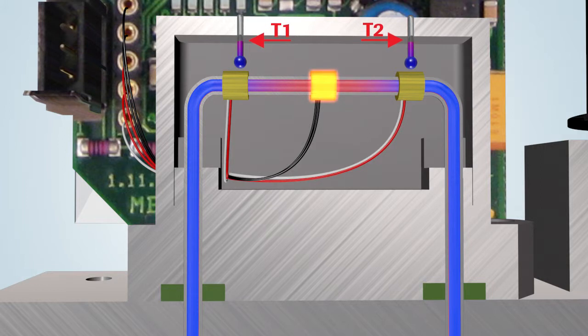As long as there is no flow, the two temperature sensors heat up evenly. The measured value is zero.